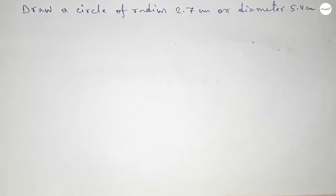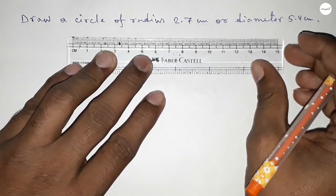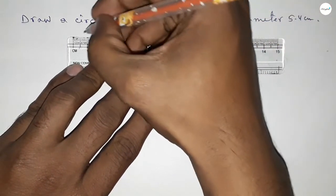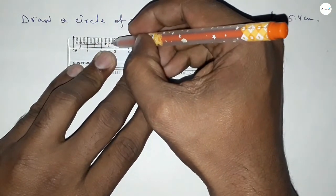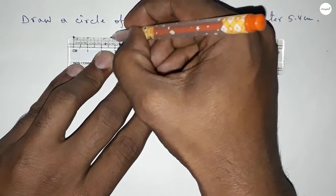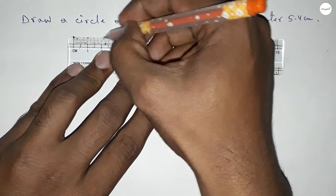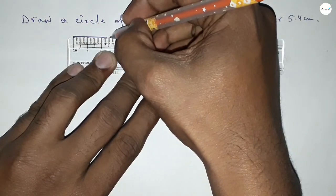So let's start the video. First of all, drawing here the length 2.7 centimeter. This is 1, 2, 5, 6, 7. So we know that the radius of a circle is half of diameter.